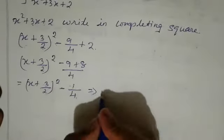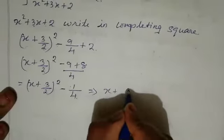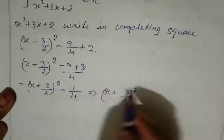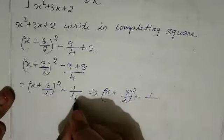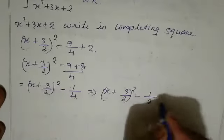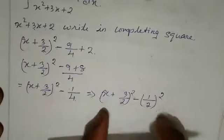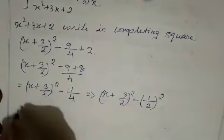Now we have to apply one more step. We can write this as x plus 3 by 2 whole square. This minus 1 divided by 4 means we can write 1 by 2 whole square. So in that form we have to apply the question.